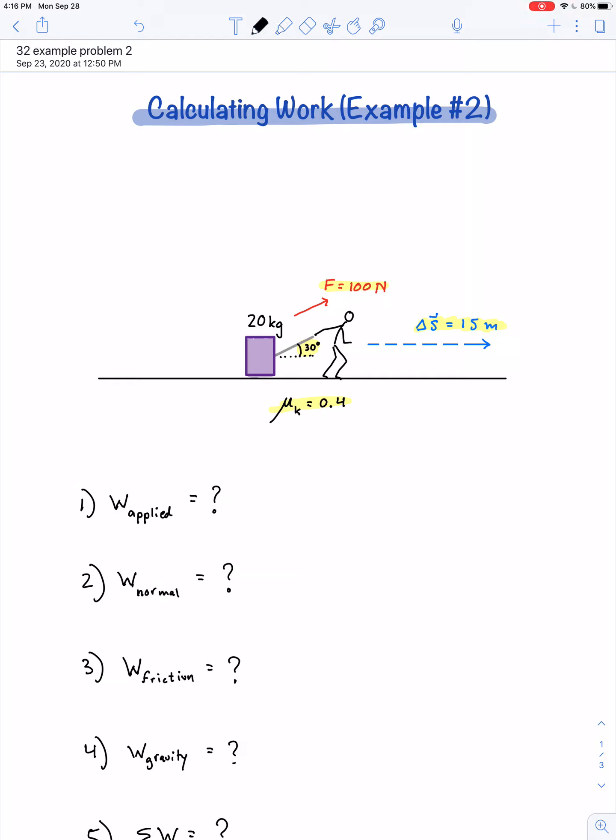We want to find, first of all, the amount of work done by the applied force. Work is the dot product of force and displacement, but the result of that is work equals the magnitude of the force times the magnitude of the displacement times the cosine of the angle made between those two vectors.